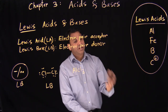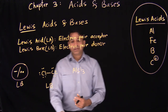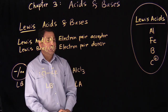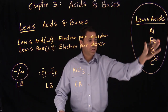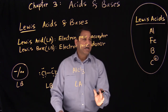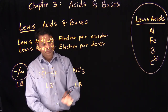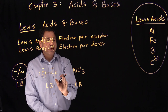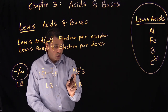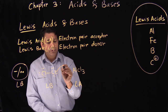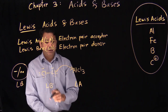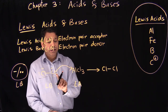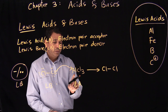They will accept the electron pair from the base. In this case, you see aluminum, so that will be your Lewis acid. That's how you find out this is a Lewis acid-base reaction — just look for these four elements. If you have that, call it a Lewis acid-base reaction. The Lewis acid accepts the electron pair from chlorine because chlorine has the electron pair, making it the base. So aluminum is your Lewis acid and chlorine is your Lewis base.